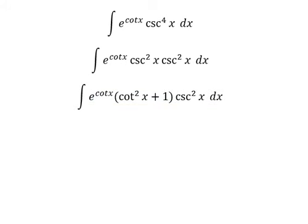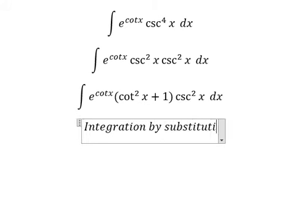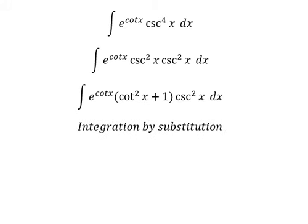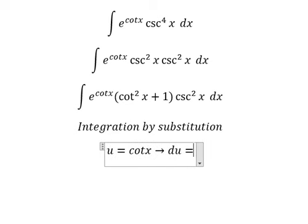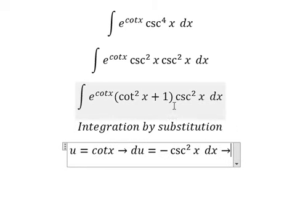Next, we need to use integration by substitution. I will use u equals cot x, so du—if we take the derivative of this—we have negative csc squared x dx. Because we don't have the negative sign here, we put the negative next to du.